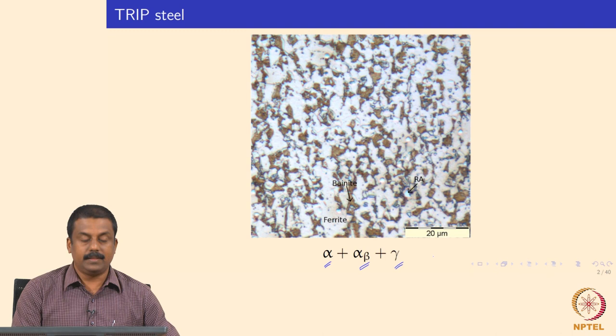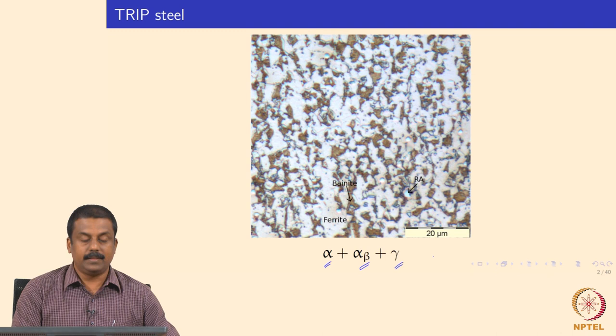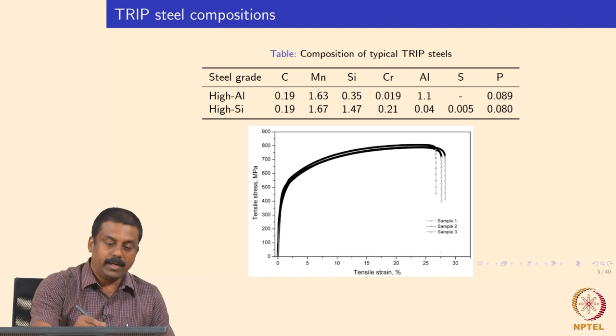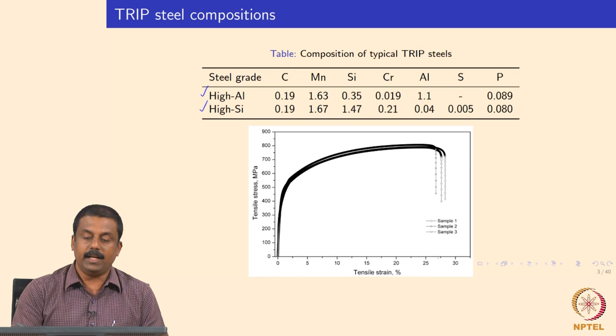As explained in previous lectures, TRIP steel contains higher amounts of either aluminum or silicon, or some amount of phosphorus, apart from carbon and manganese. Generally, TRIP steels can be classified into two important grades: one is the aluminum-based TRIP steel and the other is the silicon-based TRIP steel.